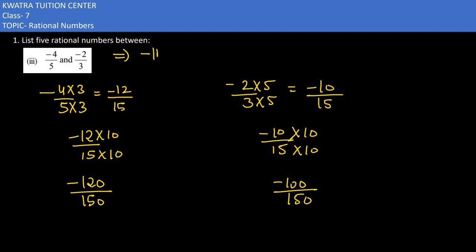Now I need to write five rational numbers in between. It can be minus 119 over 150, then minus 118 over 150, then minus 117 over 150, then minus 116 over 150, then the last one could be minus 114 over 150.